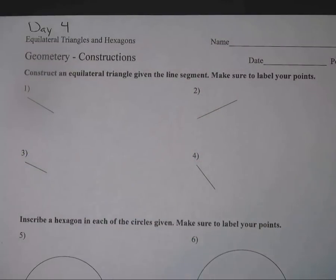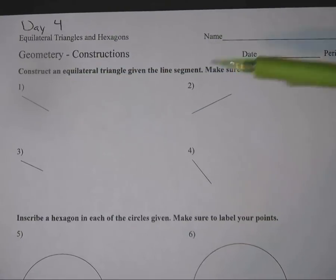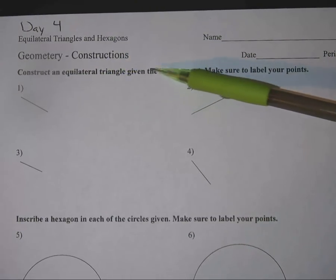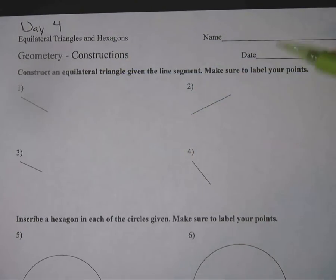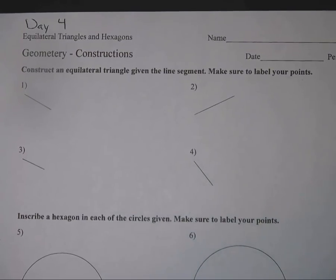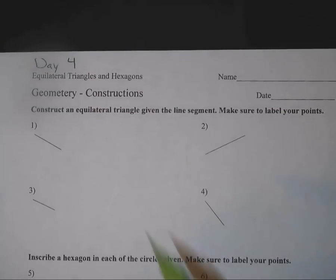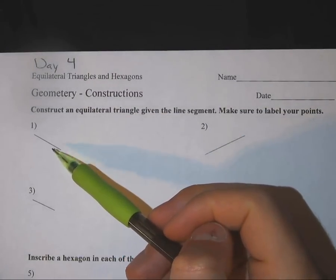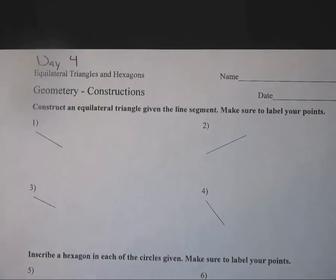Alright, here's a few more examples. I'm going to do one of these for you. The worksheet can be found in class. I'm going to do this one here. The instructions are to construct an equilateral triangle given the line segment. Make sure to label all your points, just like we've been doing this whole unit. The next section is not the same thing. As you can see, there are circles down there. So let's construct an equilateral triangle given a line segment here.